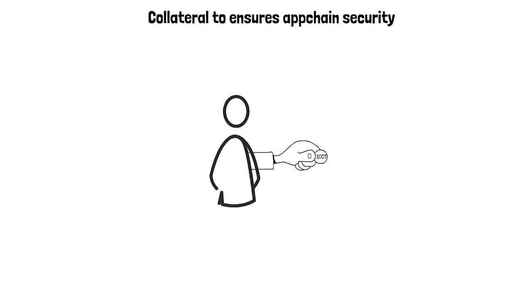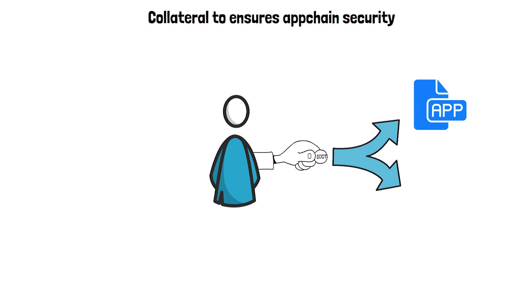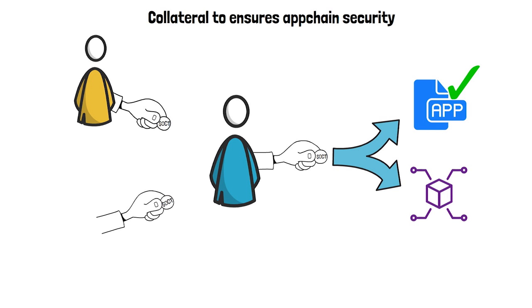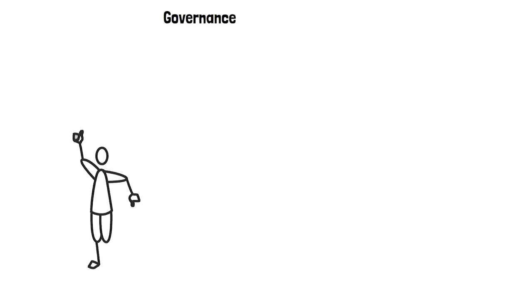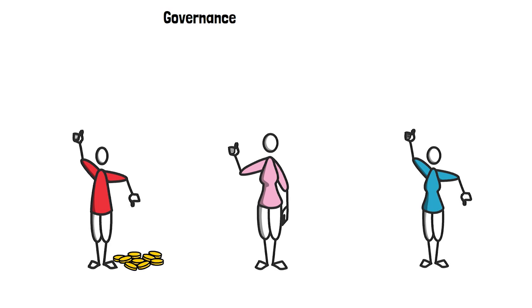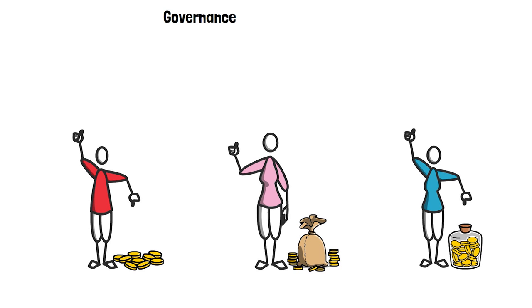OCT tokens have three main use cases. First, collateral to endorse app chain security: Octopus Network is a decentralized platform for both Web 3.0 investors and Web 3.0 app chain projects. Validators can stake OCT tokens to validate a specific app chain and run the app chain protocol; in return, validators receive rewards in the corresponding native token of the app chain they choose. Second, governance: OCT token holders are granted voting rights through the Octopus DAO. Decentralized governance gives OCT holders more realistic value expectations and eliminates large price fluctuations.